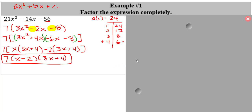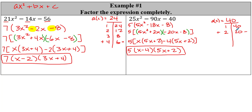Go ahead and pause the video, try the one on the right, and then come on back. Welcome back. I was able to factor out a five. My AC value was 40. I split that up as negative 20 and positive two, and ended up with the factored form. So this is one type you might see — where it's just taking out the GCF first.